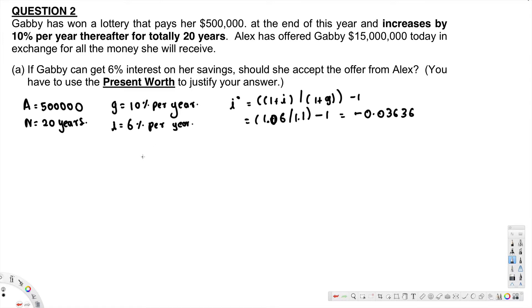Okay, now for a negative interest rate, this is the formula we use. P is equivalent to $500,000 times (1 - 0.03636)^20 - 1.